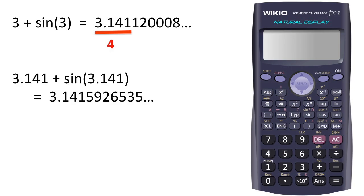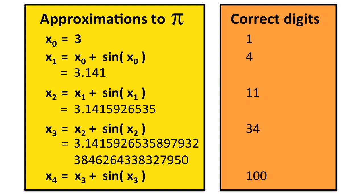Now do the same thing with this new number. Now we get 11 correct digits. Keep repeating this process and the numbers get close to pi really quickly.